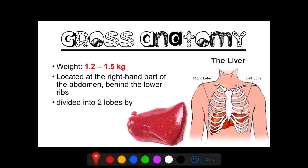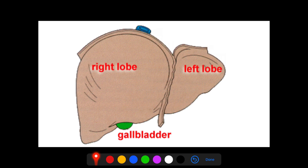Your liver is divided into two lobes by a ligament — we call it the falciform ligament. The right lobe is six times larger than your left lobe. However, there is no known functional difference between the lobes and communication flows freely between all areas of the liver. So our liver is functionally divided into two lobes, the right and the left lobe.